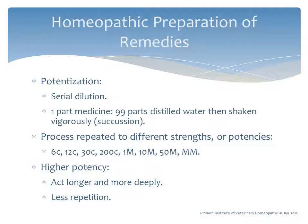Hahnemann wanted to find other medicines in nature with similar curative properties. He began testing other substances on himself and volunteers. He found that medicines produced a more gentle response when diluted. He began a process of potentization — a serial dilution taking one part medicine and 99 parts distilled water, then shaking it vigorously, a process called succussion. He found that the higher the potency, the more gentle the reaction and the more rapidly symptoms were resolved.